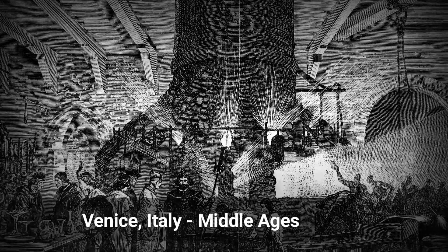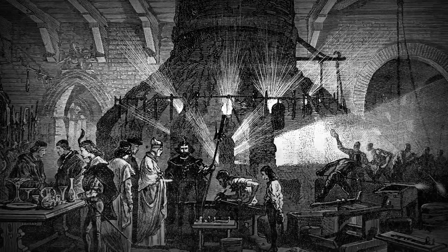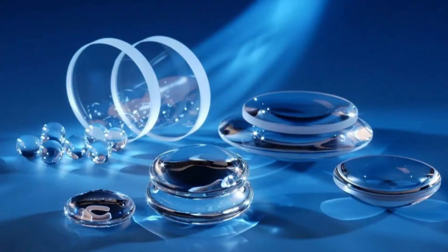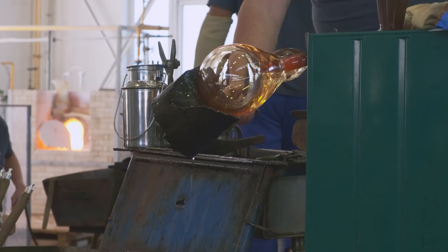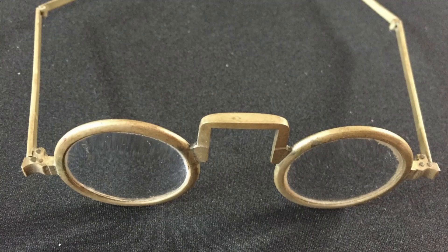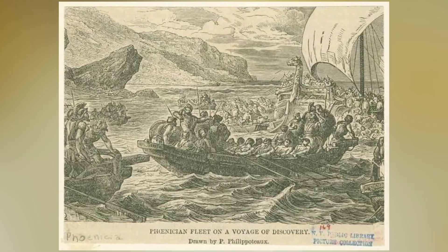Glass-making centers were established in the Middle Ages in Venice, Italy and the surrounding areas, which became known for producing high-quality glass objects. Glass-making techniques and technology evolved over the centuries, resulting in the development of new types of glass such as lead glass and optical glass, and widespread use in industries including construction, automotive, and optics. Pliny, the Roman historian, attributed the invention of glass-making to Phoenician sailors.